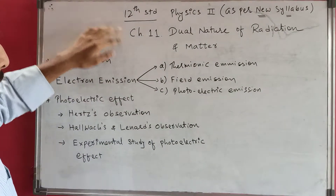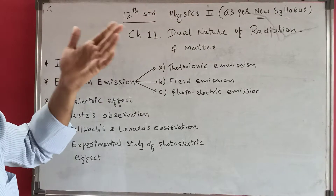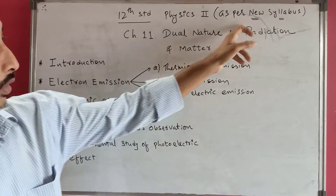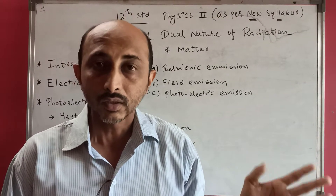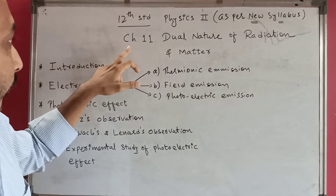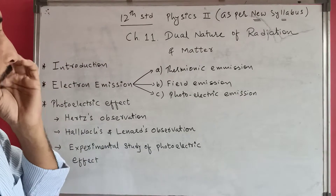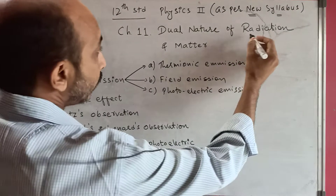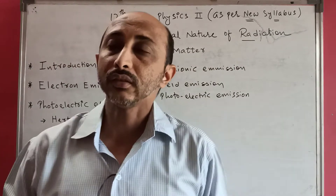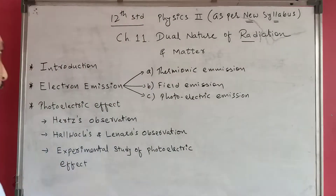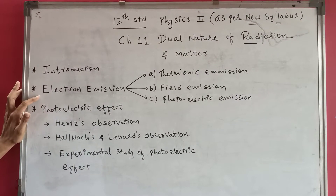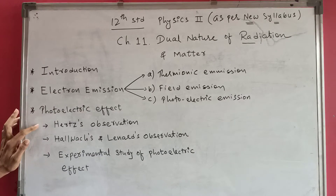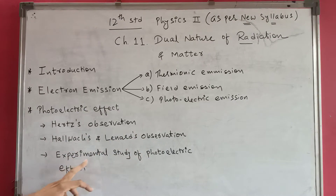I have started with Physics Part 2. There are two parts — Physics 1 and Physics 2. I have started with Chapter Number 11: Dual Nature of Radiation and Matter, as per the new syllabus. The topics covered here are: introduction, what is radiation, electron emission, and photoelectric effect — which has three sub-topics: Hertz's observation, Hallwachs and Lenard's observation, and experimental study of photoelectric effect.